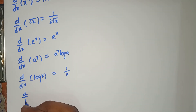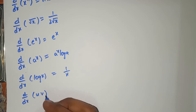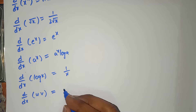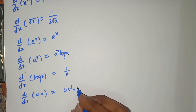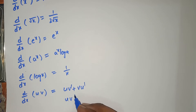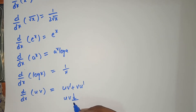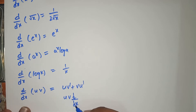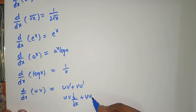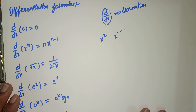d by dx of uv — here x and y, or any other alphabets, anything, we can use this formula. It equals u times v dash plus v times u dash. Here dash means differentiating: u times d by dx, plus v times u d by dx.